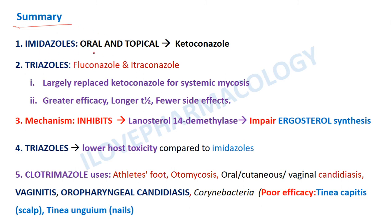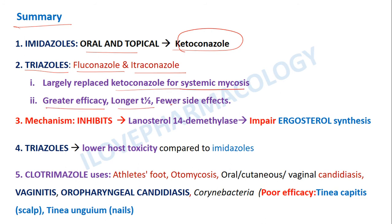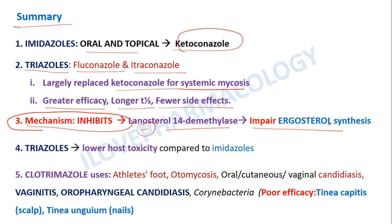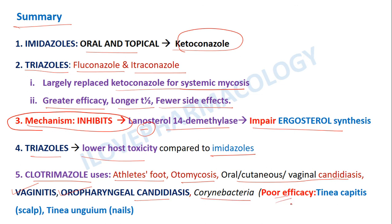In summary, ketoconazole is the only imidazole that can be given both orally and topically; all others are topical. Triazoles — especially fluconazole and itraconazole — have largely replaced ketoconazole for systemic mycoses due to greater efficacy, longer action, and fewer side effects. The mechanism of action of azoles applies to both imidazoles and triazoles: they inhibit lanosterol 14-α-demethylase, impairing ergosterol synthesis. Triazoles have lower host toxicity than imidazoles. Clotrimazole is used for athlete's foot, otomycosis, oral, cutaneous, and vaginal candidiasis, and oropharyngeal candidiasis, but has poor efficacy against tinea capitis and tinea unguium.